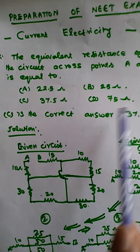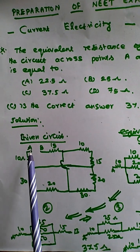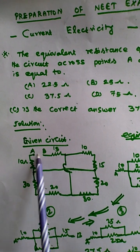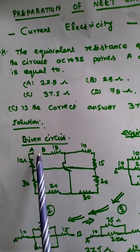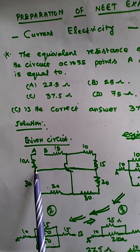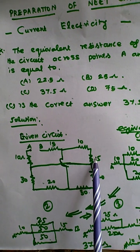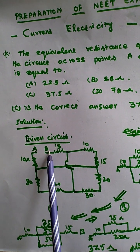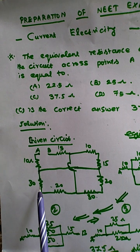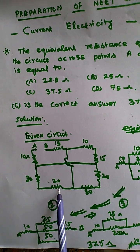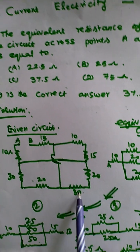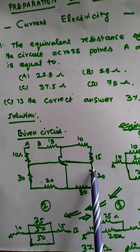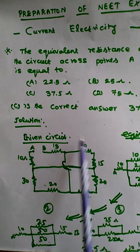How we solve this: the given circuit has points A and B. From A, a 10 ohm resistance is connected, then 15 ohms, then 10 ohms, then 15 ohms connected to B. Additionally, the 10 ohm is connected to 30, and 30 is connected to 60, 60 is connected to 30, 30 is connected to 20, and 15 and 20 are both connected. This is the given circuit.